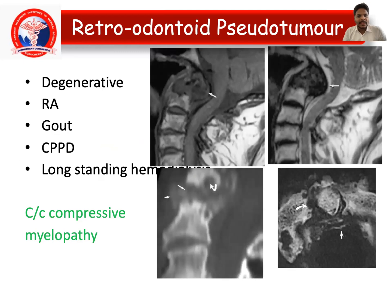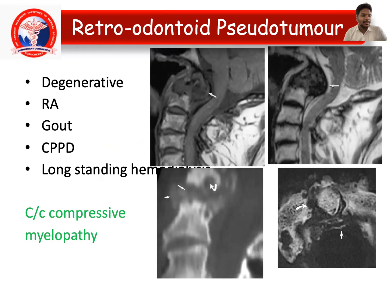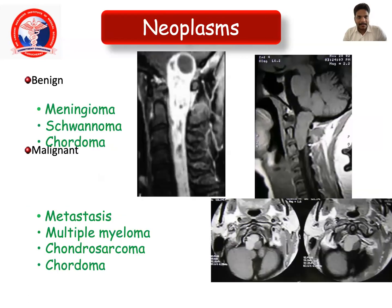Retro-odontoid pseudotumors can be degenerative, rheumatoid arthritis, psoriasis, gout, CPPD, or long-standing hemarthropathies. They usually cause a complication of compressive myelopathy.